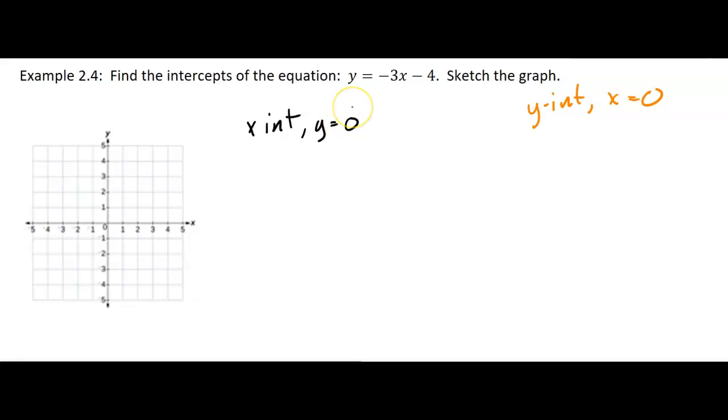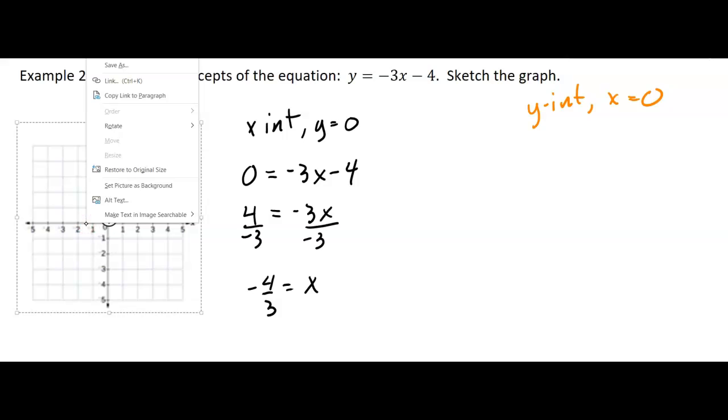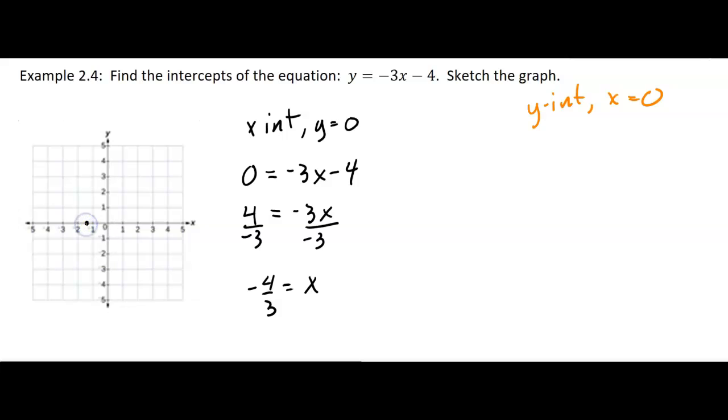So if I let y be 0, I get 0 equals negative 3x minus 4. If I add the 4 to the other side and divide by negative 3, I get x equals negative 4 thirds. So I can graph that point. I know it's the x-intercept, so it's going to be right on the x-axis. Negative 4 thirds is going to be about there.